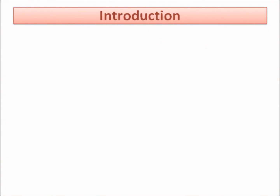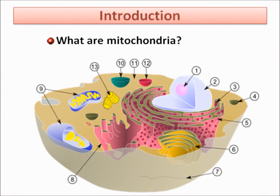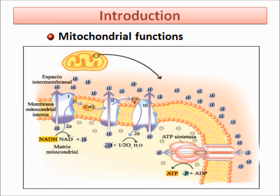As a mitochondrion, you should know that our body is made up of an outer membrane and an inner membrane that forms folds called cristae. We have our own DNA and some ribosomes. Our main function is generating ATP through oxidative phosphorylation in the respiratory chain.